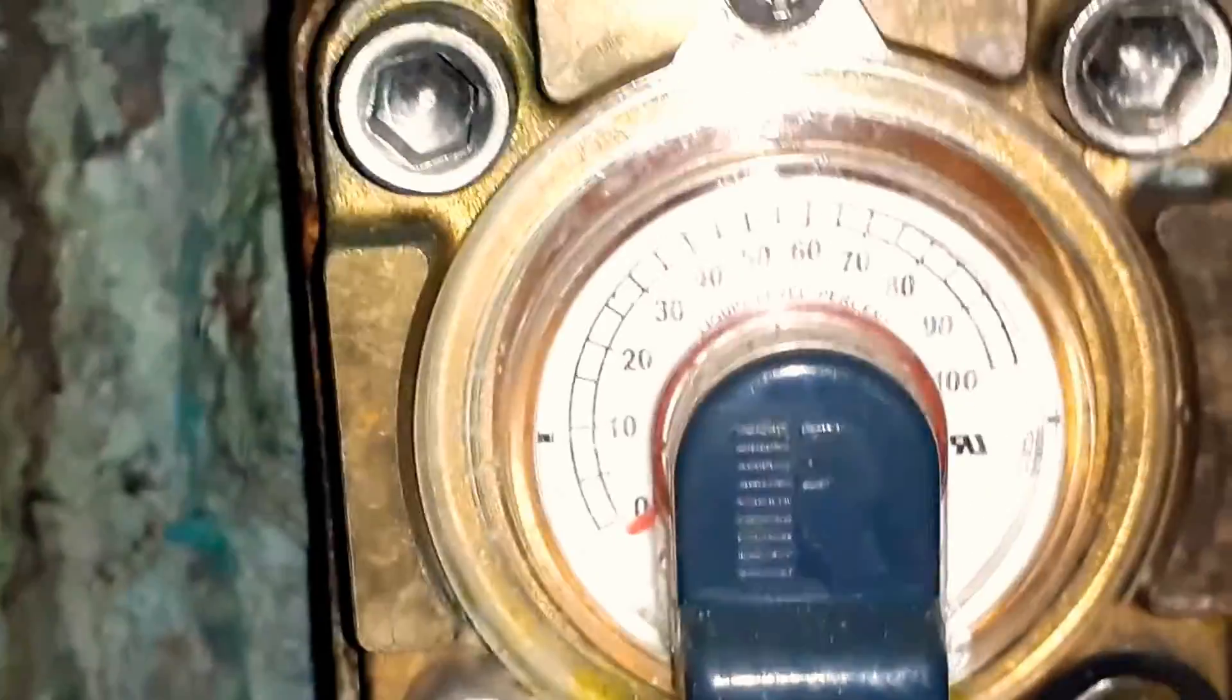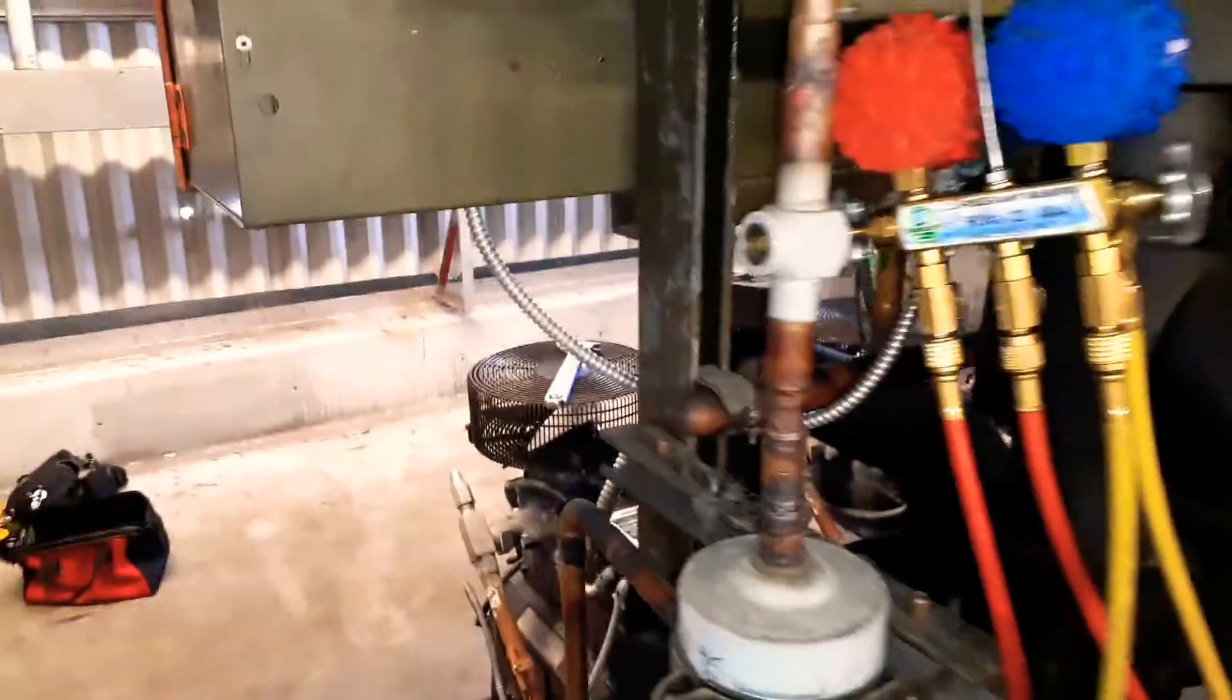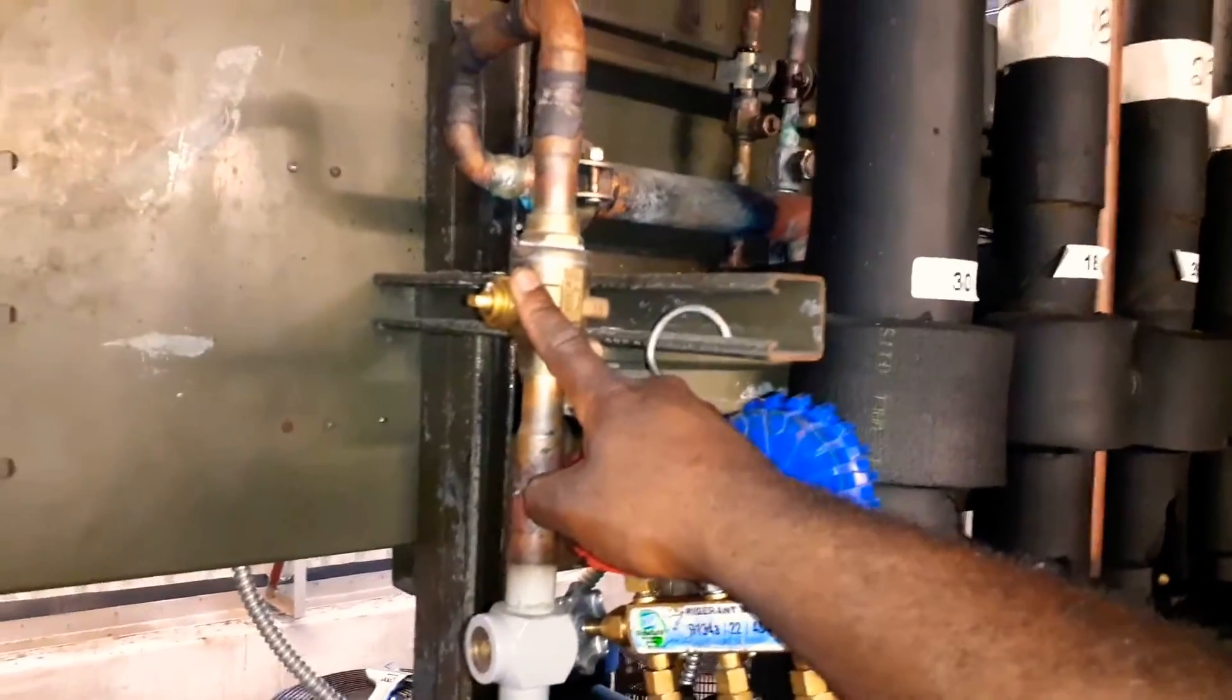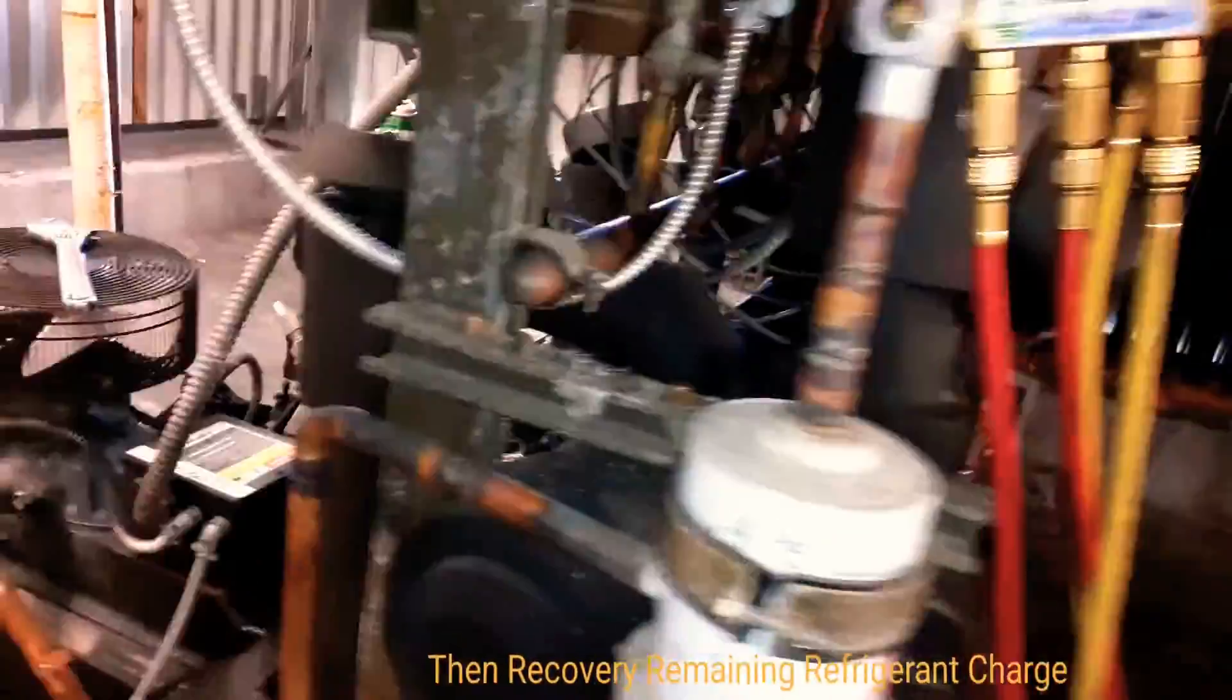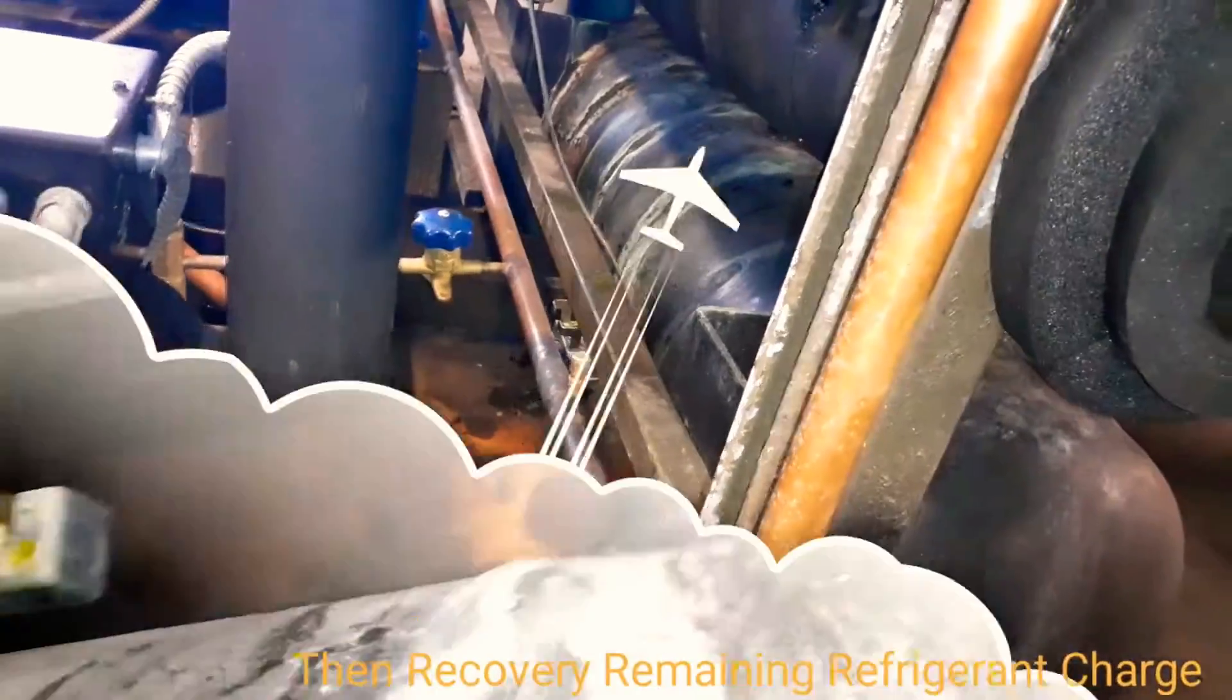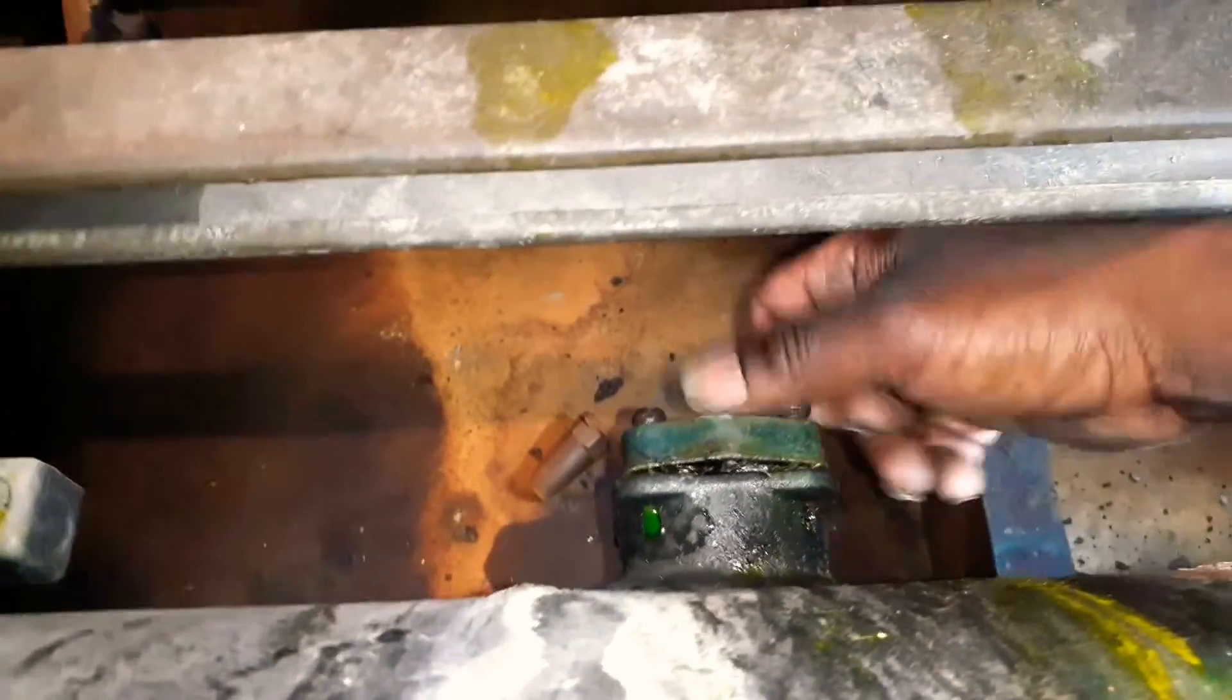Let's just check our receiver gauge right now to see if we pumped down. Alright, as you can see we're down to zero. Now that all my compressors stopped, what I'm going to do is close my liquid line and also close my liquid header that's feeding our demand cooling.